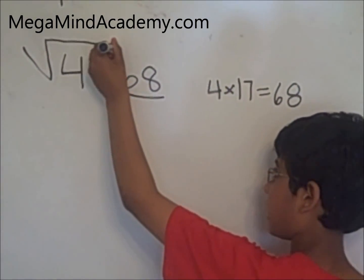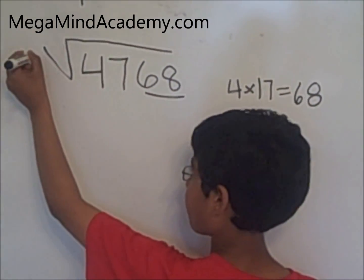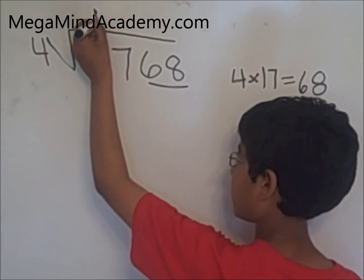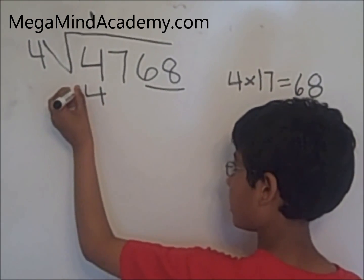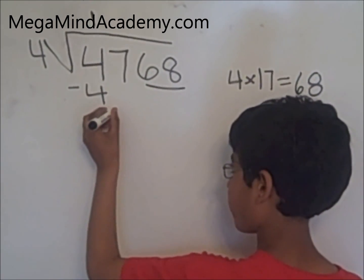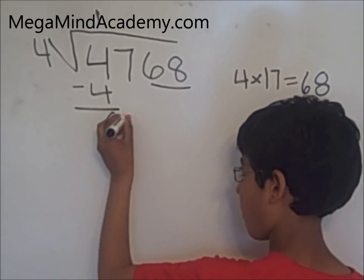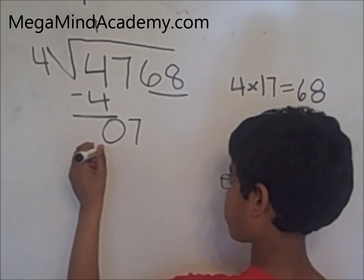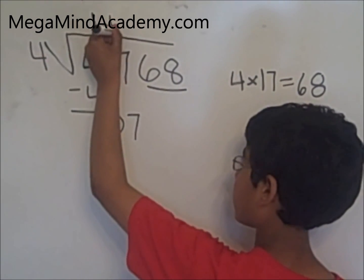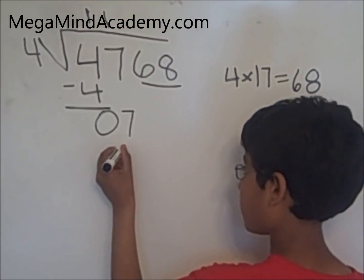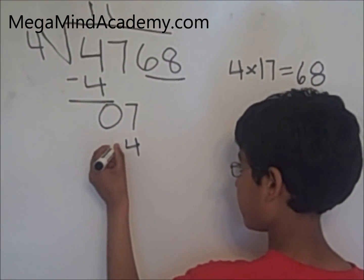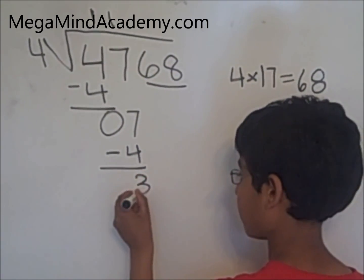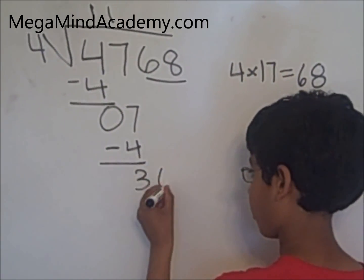4768 divided by four. Four times one equals four. So four subtracted by four equals zero. Now you bring the seven down. Four times one equals four. You subtract four from seven and you get three. Now you bring the six down.